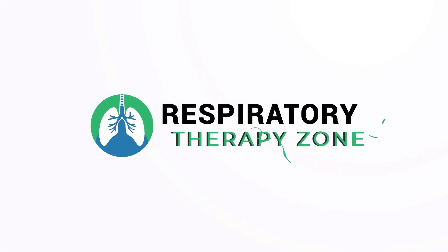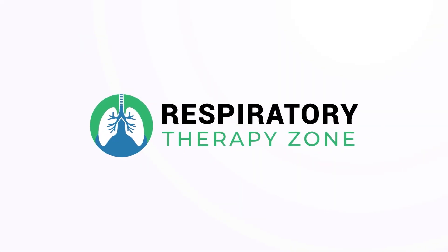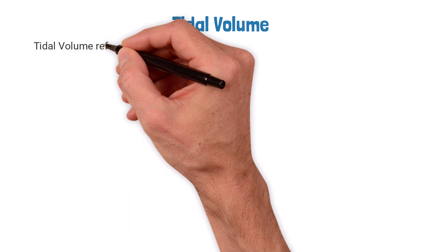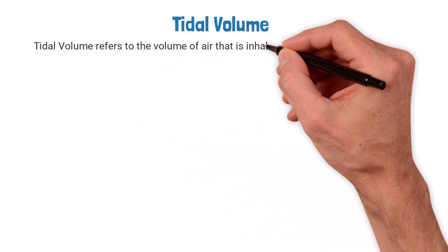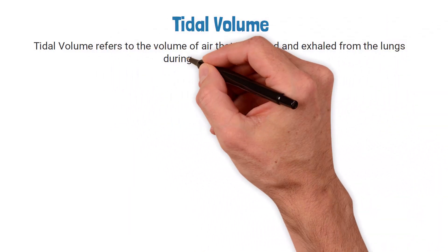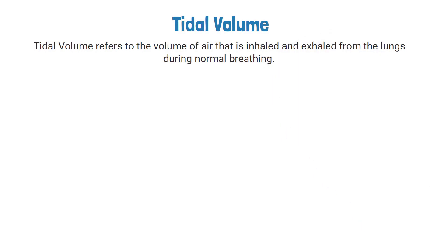Let's talk about the tidal volume setting. Tidal volume refers to the volume of air that is inhaled and exhaled from the lungs during normal breathing. The tidal volume setting on the ventilator determines how much air is delivered to the lungs by the machine.